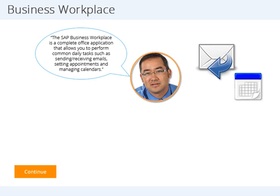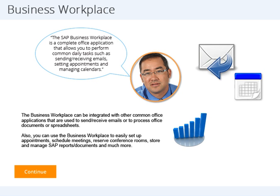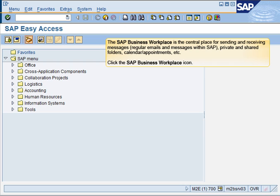The SAP Business Workplace is a complete office application that allows you to perform common daily tasks such as sending or receiving emails, setting appointments, and managing calendars. It is the central place for sending and receiving messages, reviewing private and shared folders, scheduling appointments, and much more.